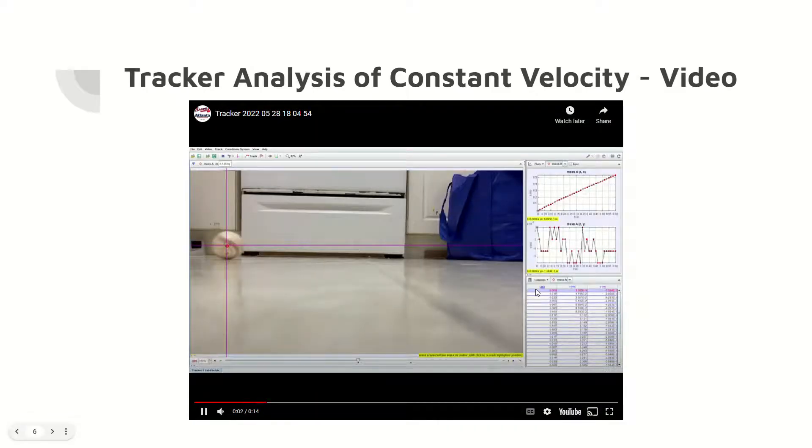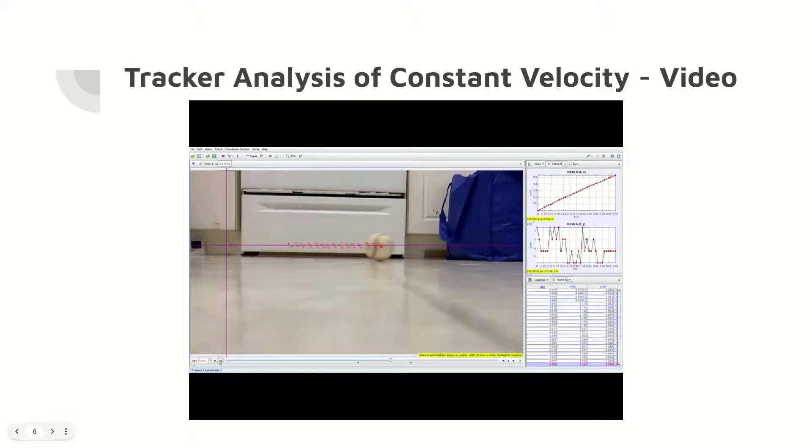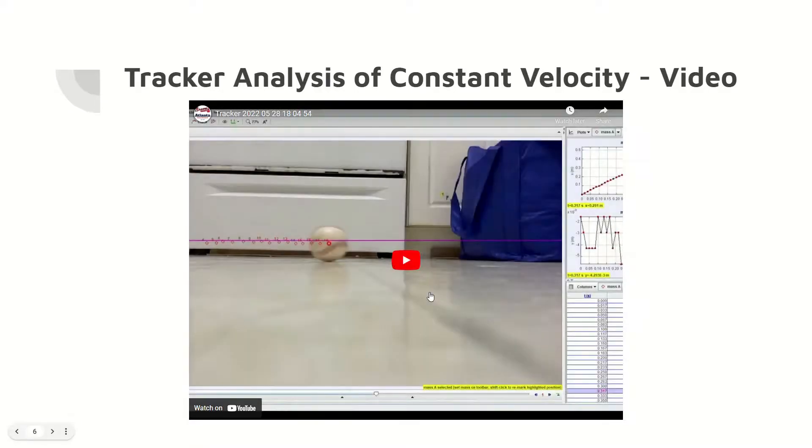Here is the tracker analysis of the baseball motion, which measures the position of the baseball as a function of time. The baseball moves from left to right, so the x-axis chosen to measure the position is in the positive direction, with the origin located at the center of the baseball at zero seconds. All positions are positive, and a positive slope of position versus time was obtained.